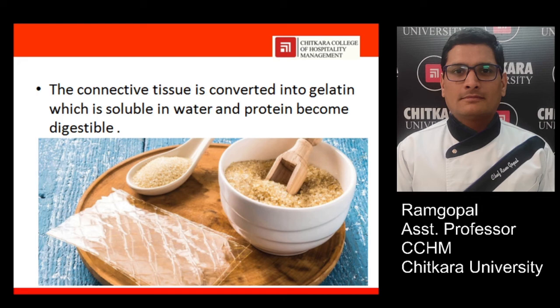Further, the connective tissues are converted into gelatin, which is soluble in water, making the protein digestible by the body. Gelatin comes from the cartilage of the bone — giving extra heat to the cartilage turns it into a substance that can be dissolved in water and used in cooking preparations. Gelatin is a protein product that helps to stabilize food products like mousse, helps create different food products, and increases the nutritional value of the food.